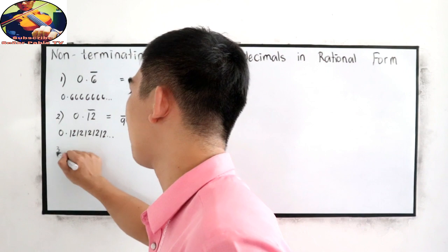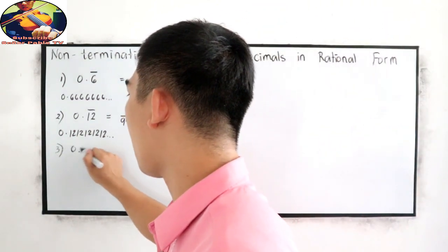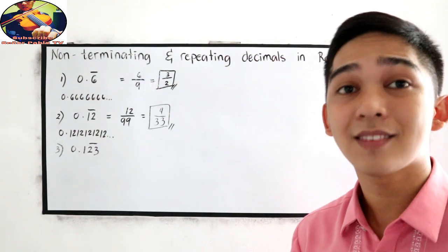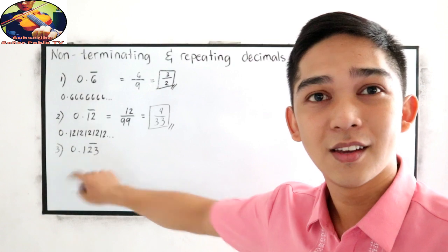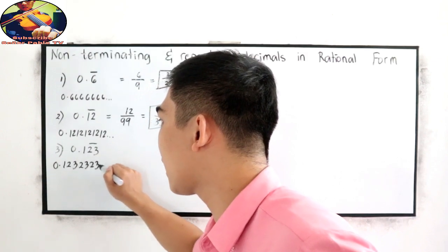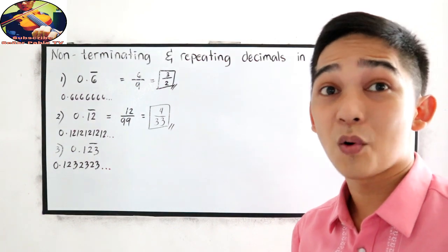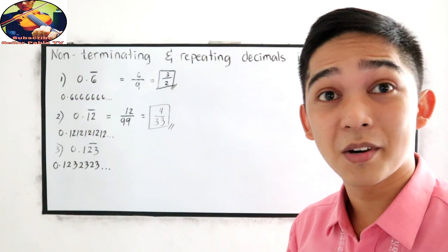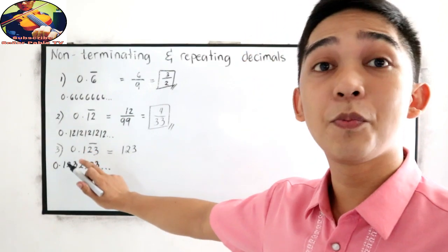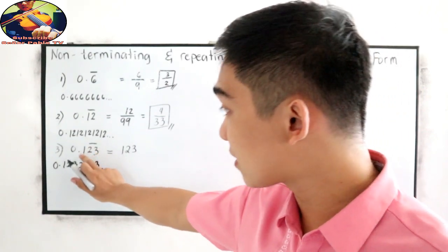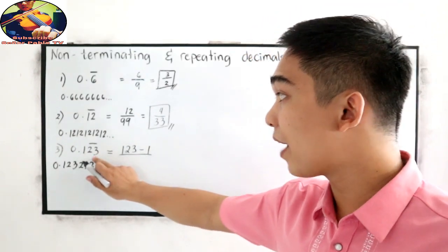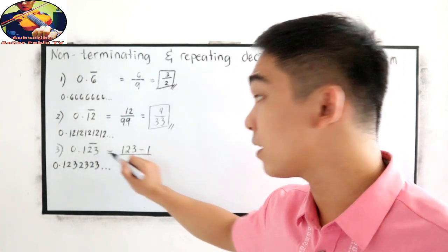Next, number 3. We have 0.123, but the bar is located on 2 and 3 only — 1 is not included. So that is 0.1232323 and so on. Our shortcut: copy 1, 2, 3, then subtract the number that is not included in the bar — in this case, 1.